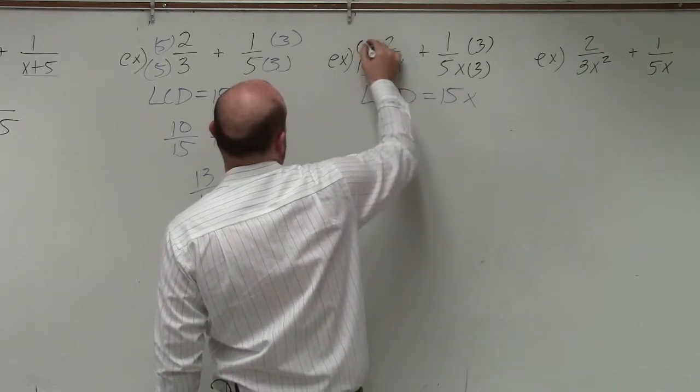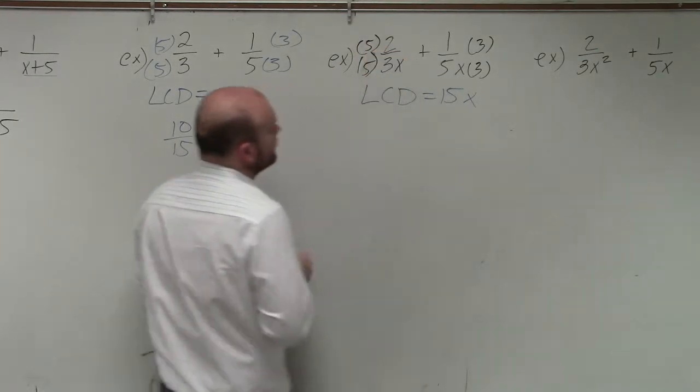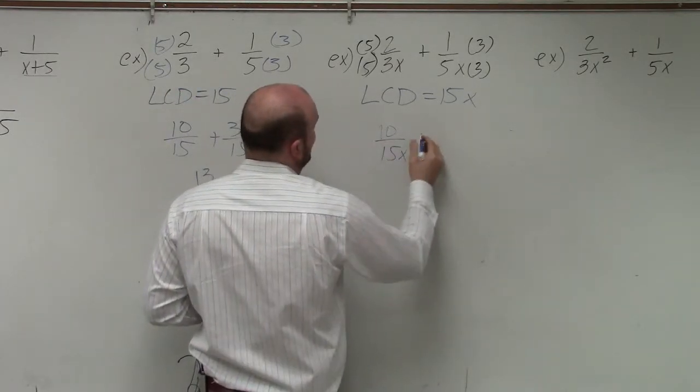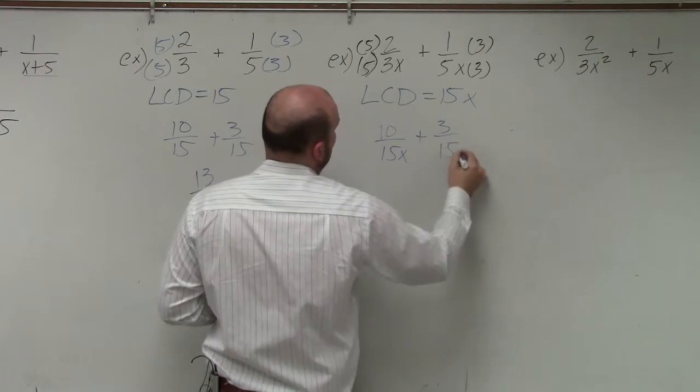Why do I keep on putting 2? 5 over 5. So now I obtain 10 over 15x plus 3 over 15x.